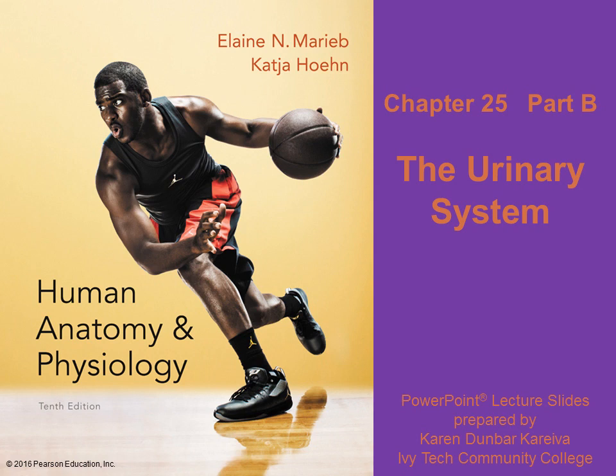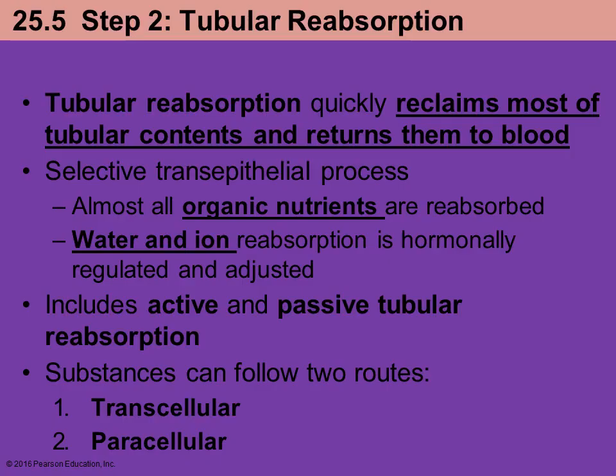This is chapter 25 part B. We're still dealing with the urinary system. Last time, chapter 25 part A ended with discussing the filtration that occurred within the glomerulus, and now we're moving on to the second step, which deals with tubular reabsorption.